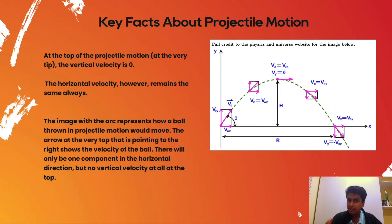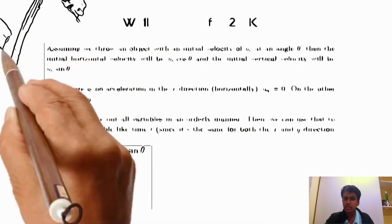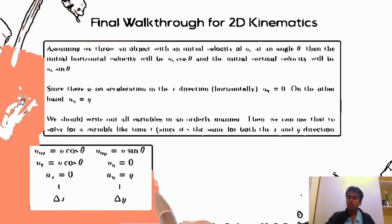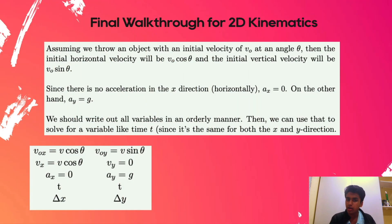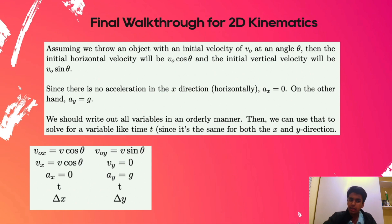Key facts about projectile motion: at the top of the projectile motion, the vertical velocity is zero. The horizontal velocity remains constant for the entire motion — there is no acceleration in the x direction. If an object is thrown with an initial velocity of v-naught at an angle theta with respect to the ground, the horizontal velocity will be v-naught cosine theta and the initial vertical velocity will be v-naught sine theta. Since there is no acceleration in the x direction, a of x equals zero. Write out all variables in an orderly manner to simplify problem-solving and reduce errors.